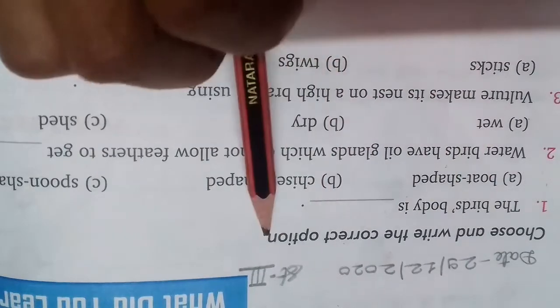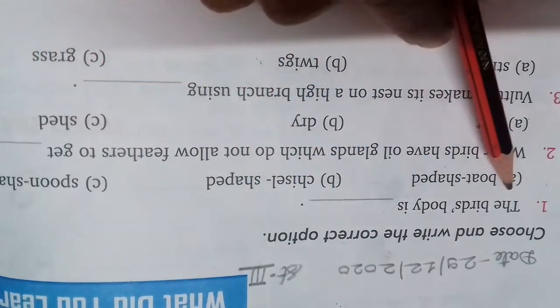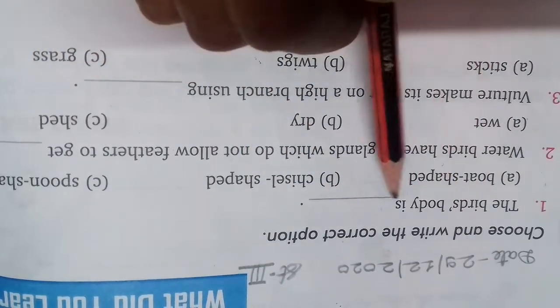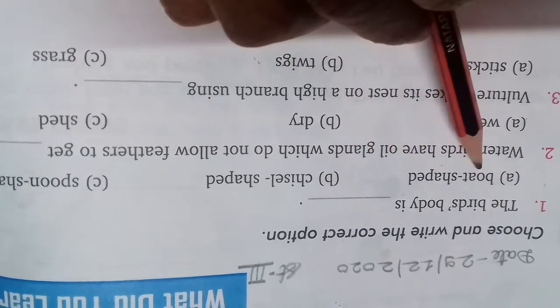Choose and write the correct option. The first point is: the bird's body is... bird's body kaisi hoti hai... boat shaped.